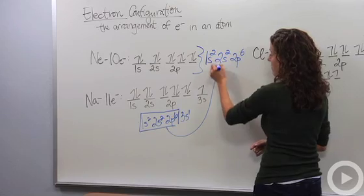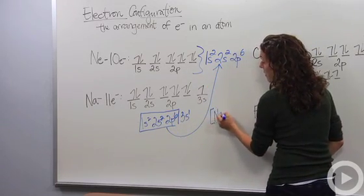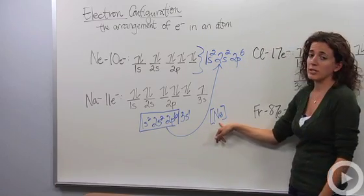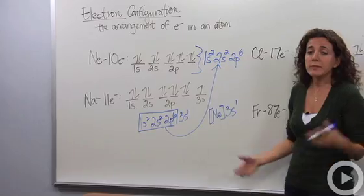So instead of writing this again, the whole thing, I can just write it, well, sodium has the same electron configuration as neon plus a 3s1 electron. Easy enough.